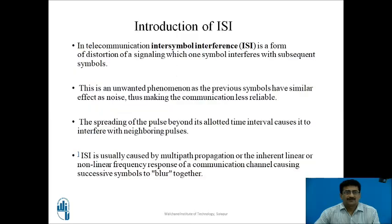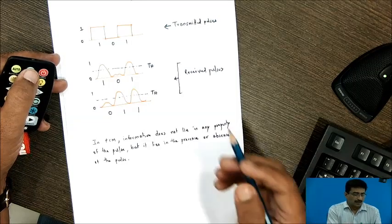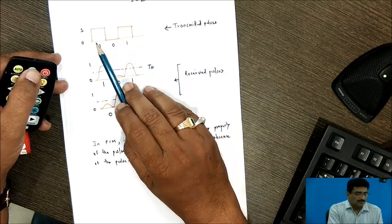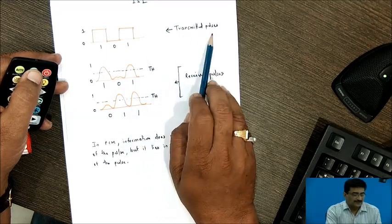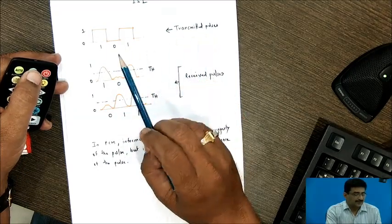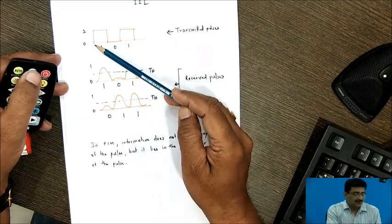Now, let us start with introduction of inter-symbol interference. Now, we will come to this slide afterwards. First, we will take one example. See here, this is the message that we are considering. Suppose 1, 0, 1 is the transmitted pulses. So, these are the levels that we see that 0 and 1.